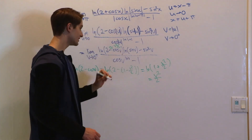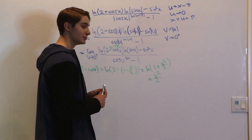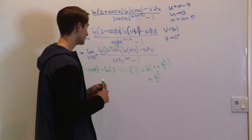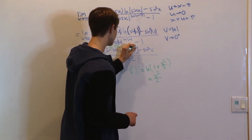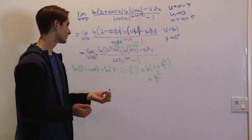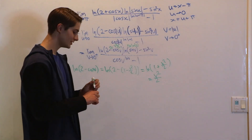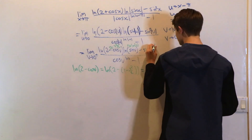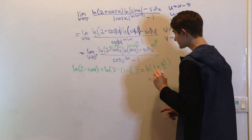Now for ln(sin v): we know sin v ≈ v, so ln(sin v) ≈ ln v — the v³/3! term is too small to care about. We can do the same for sin²v: that's approximately v².